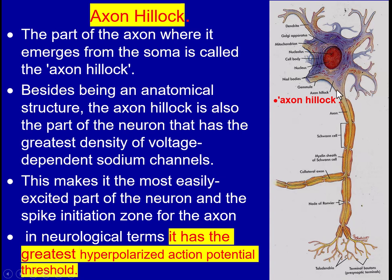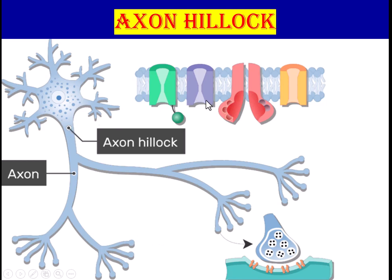In neurological terms, the axon hillock has the greatest hyperpolarization action potential threshold. At this area the action potential is produced. Hyperpolarization occurs when the action potential is over and sodium gates are still open, causing further sodium rush. When impulses are received at the dendritic level, the neuron is excited and this area is both anatomically and functionally the most excitable area of the neuron.